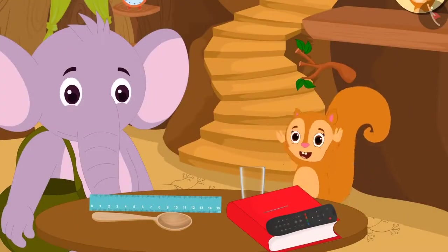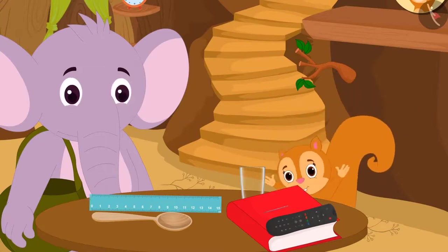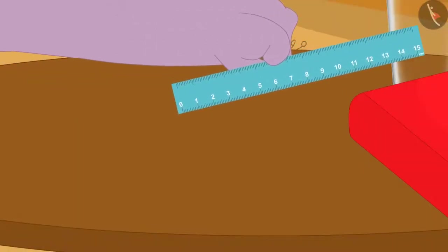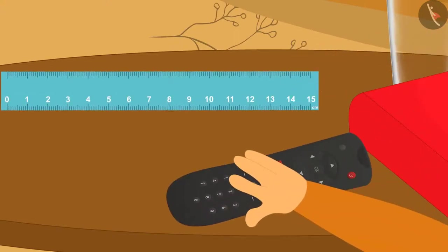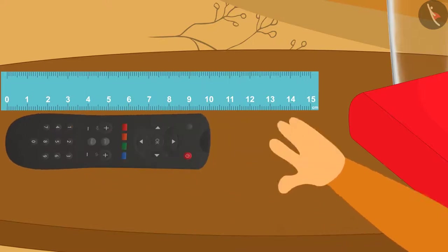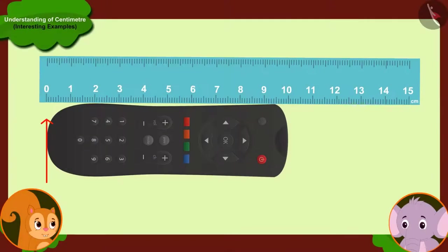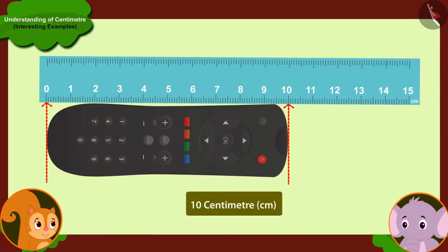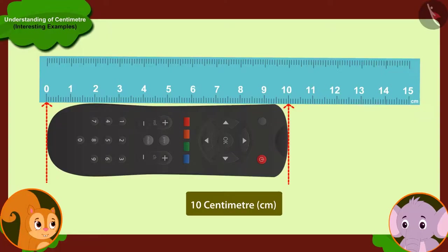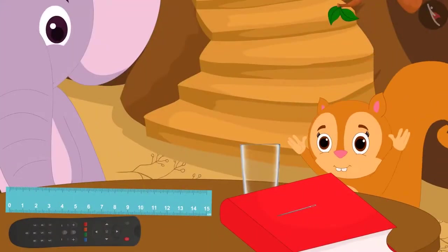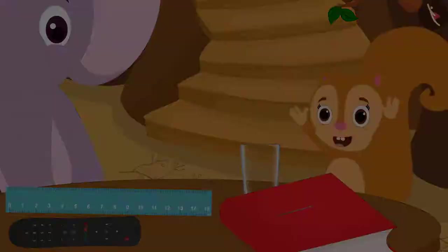Chanda got really excited about the ruler. She immediately took the ruler from Appu and placed her TV remote next to it. Chanda told Appu, look Appu, my TV remote is ten centimetres long. I learnt to measure the length of objects using the ruler. After saying this, Chanda started dancing happily.